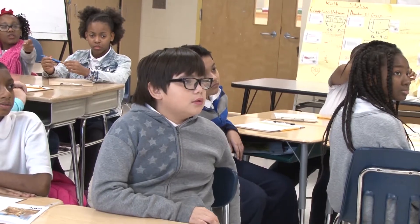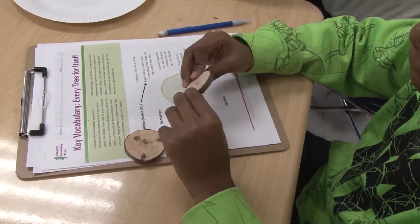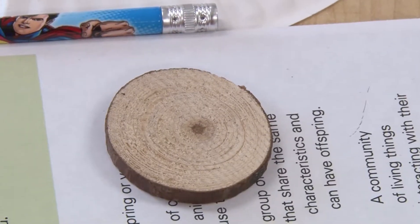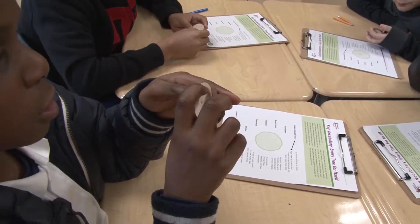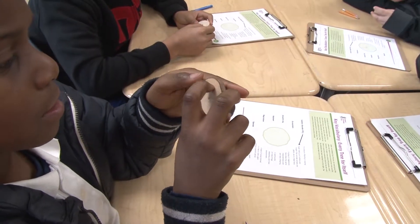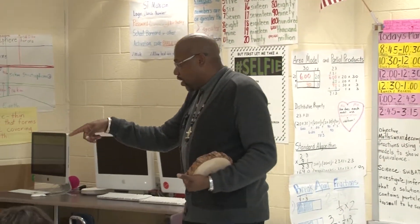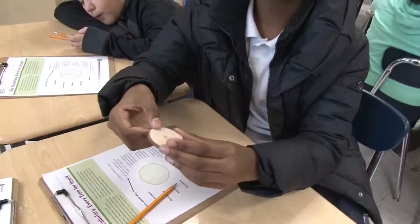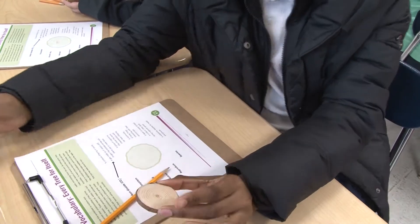Now we're going to talk about something. You have something on your desk called tree cookies. You can pick it up in your hand. Everybody should have at least one tree cookie. A tree cookie tells the story of a tree. What I want you to do right now is examine the tree cookie at your table and tell me how old that branch or tree was by counting the tree rings.